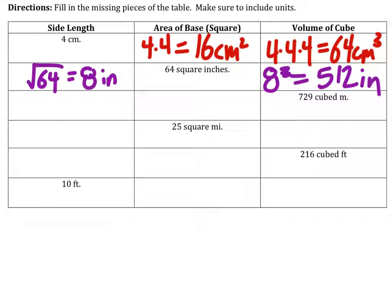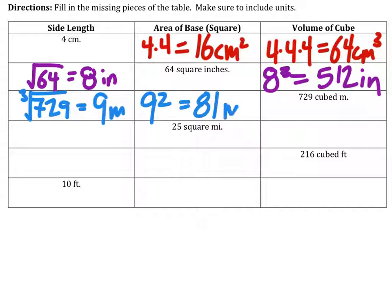The volume of that cube, the next one, is 729 meters cubed. So the side length would be the cube root of 729, which is 9 meters. So the area is 9 squared, which is 81 meters squared.